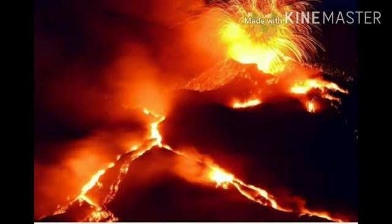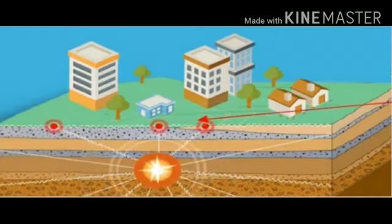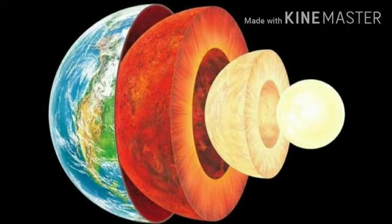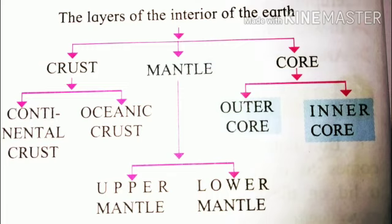For instance, when we go deep into a mine, we feel an increase in temperature. Similarly, the magma coming out of the volcanoes from the earth's interior is hot. Such estimations were made by geologists. Several earthquakes occur in various places on the earth every year, and seismic waves are generated. These waves travel through the interior of the earth.